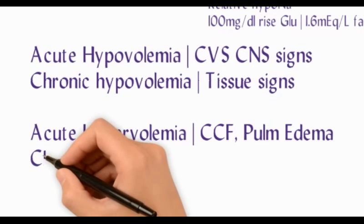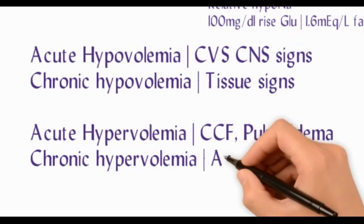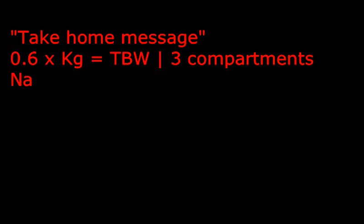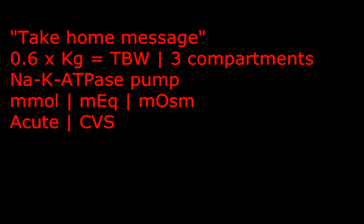Thus, the take-home message is that 60% of the body is made of water and it is divided into three compartments. The sodium-potassium pump is responsible to maintain this balance, and every cell maintains its molar concentration, electrical balance, and osmolar balance. Acute volume changes present with CVS and CNS signs; chronic volume changes present with tissue signs.